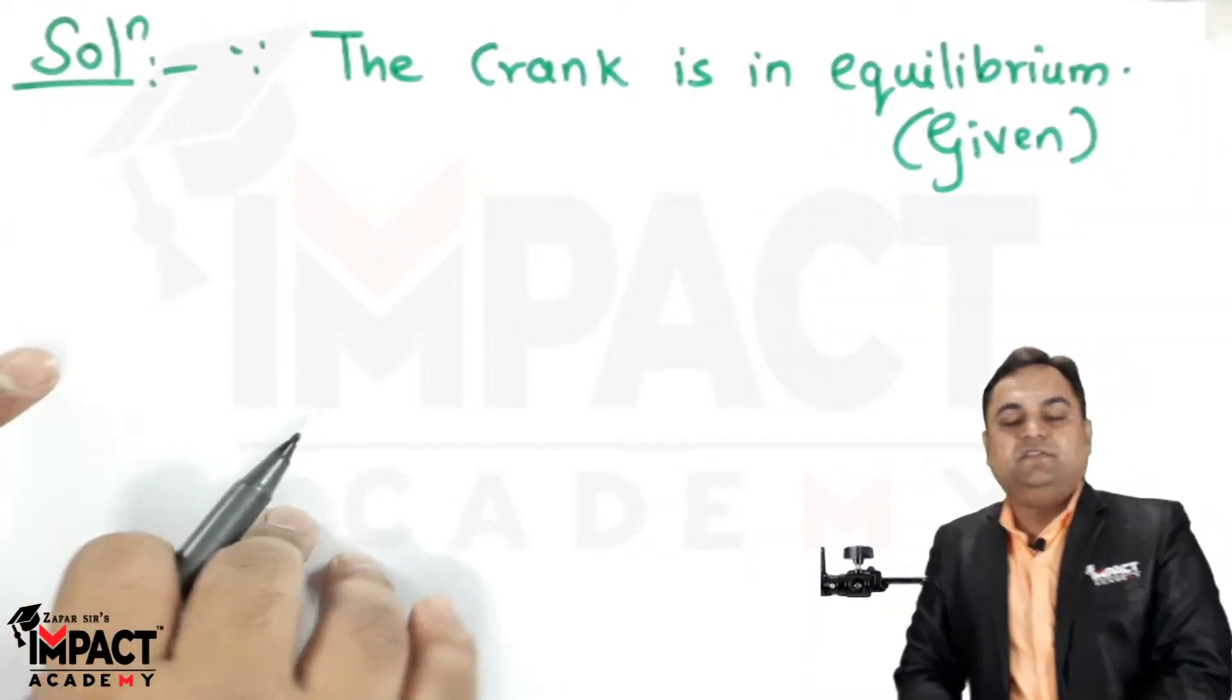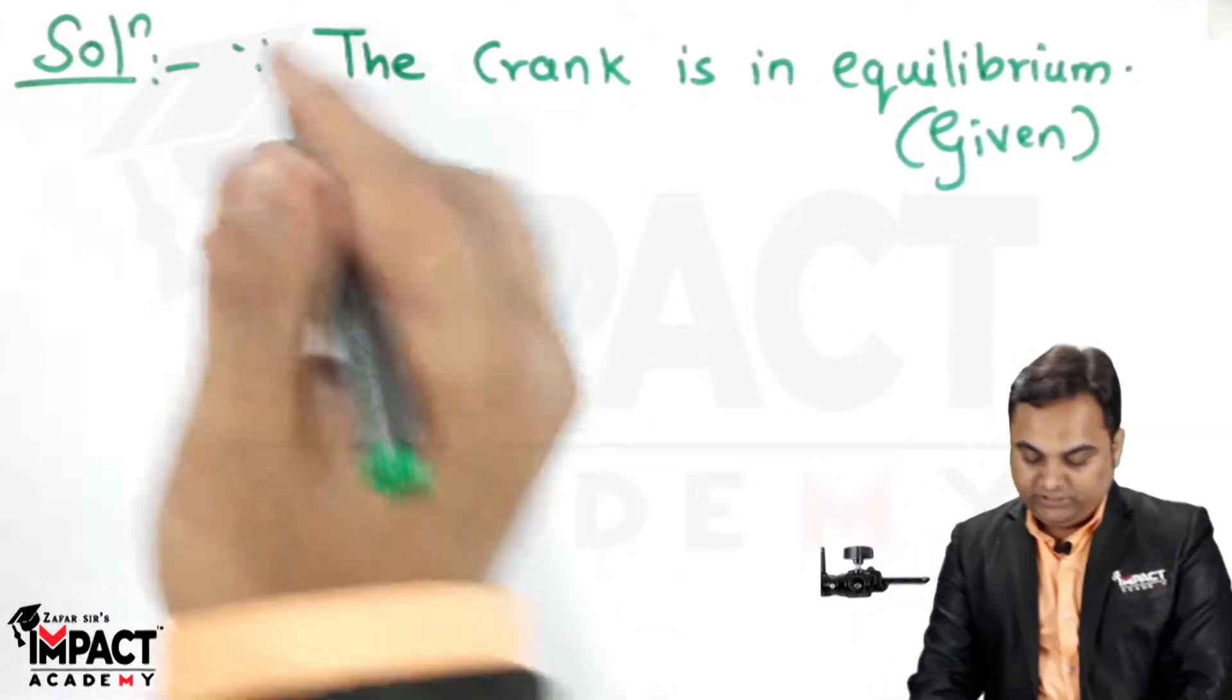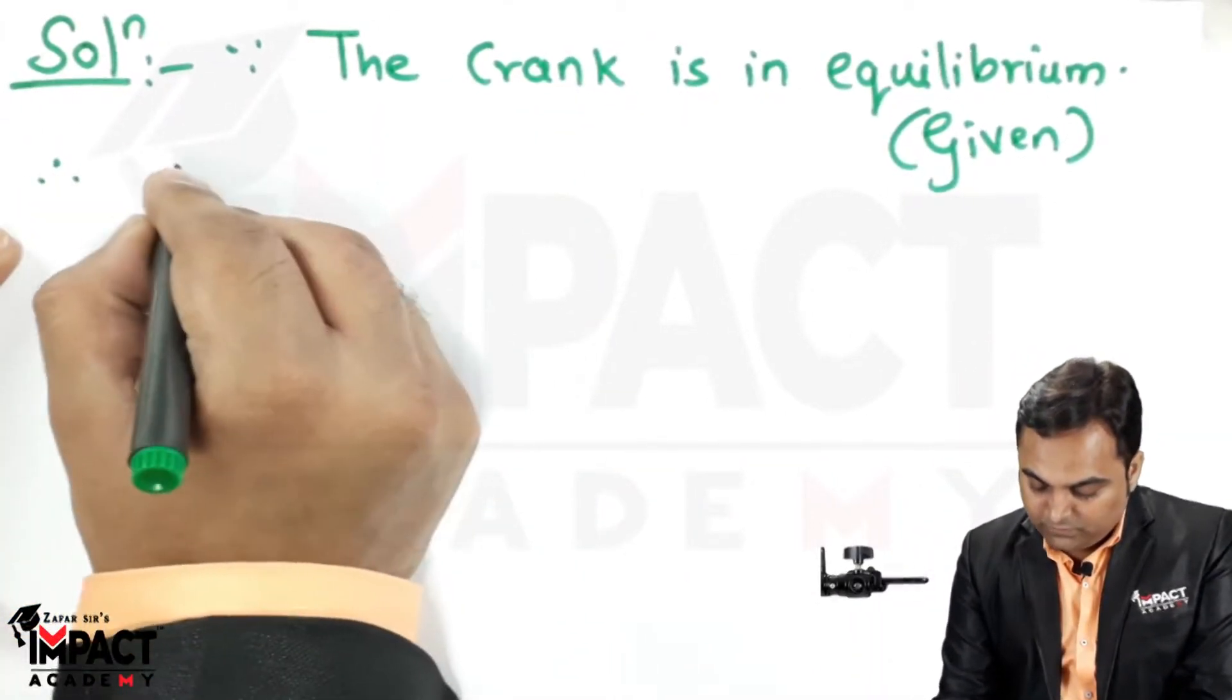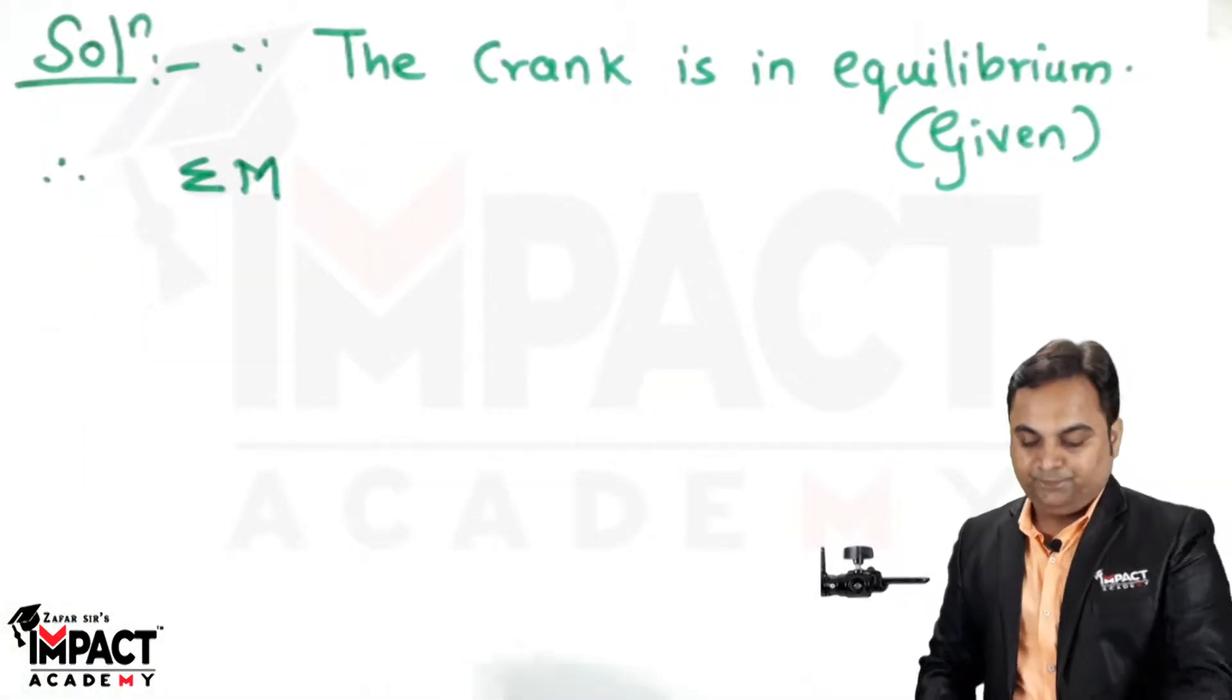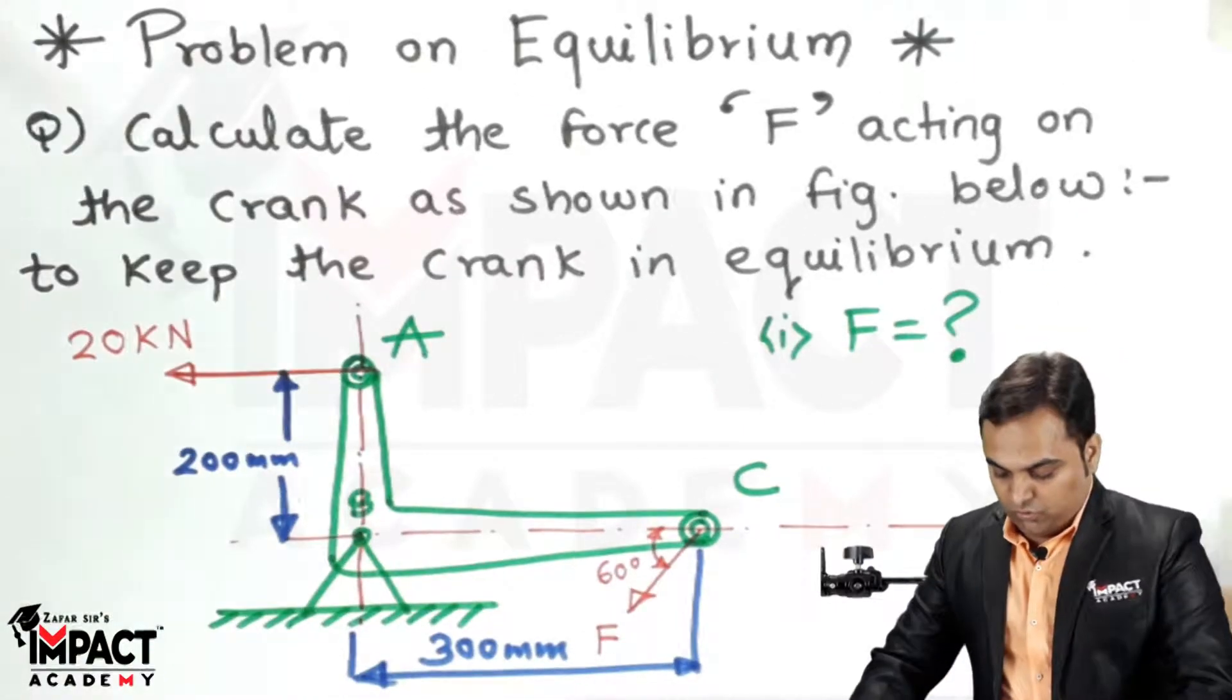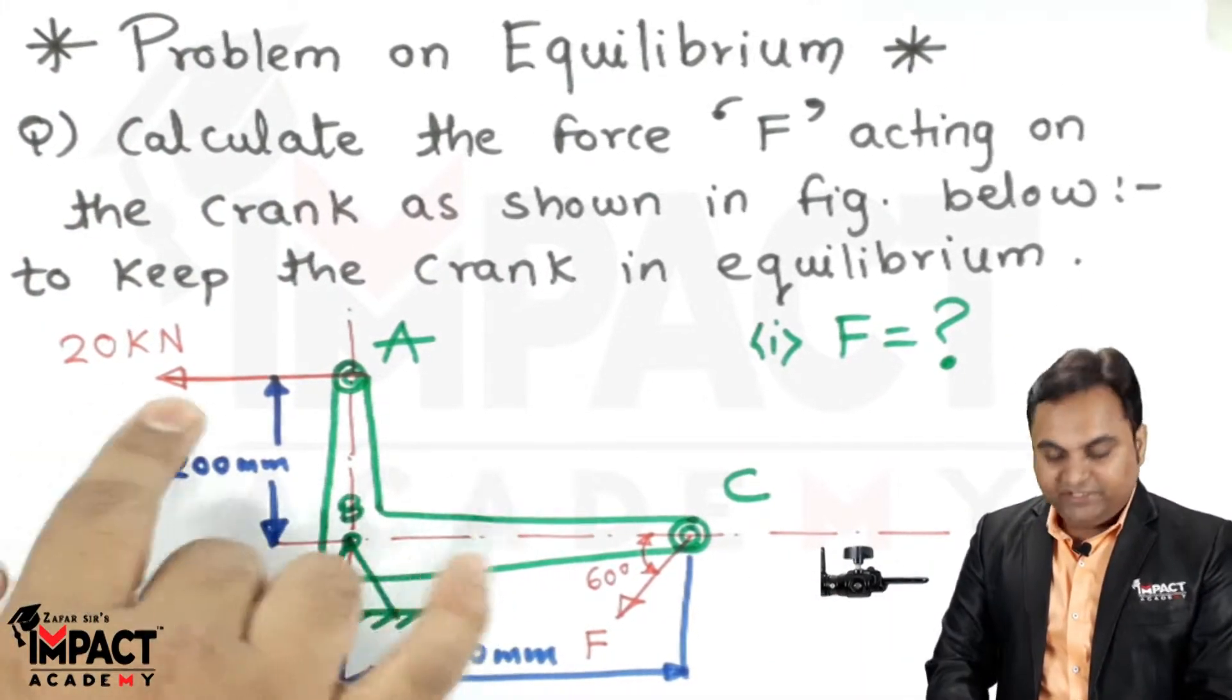Since the given crank is in equilibrium, the condition would be the summation of moments of all forces. Now, when we see this crank, there is a 20 kN force acting on it.